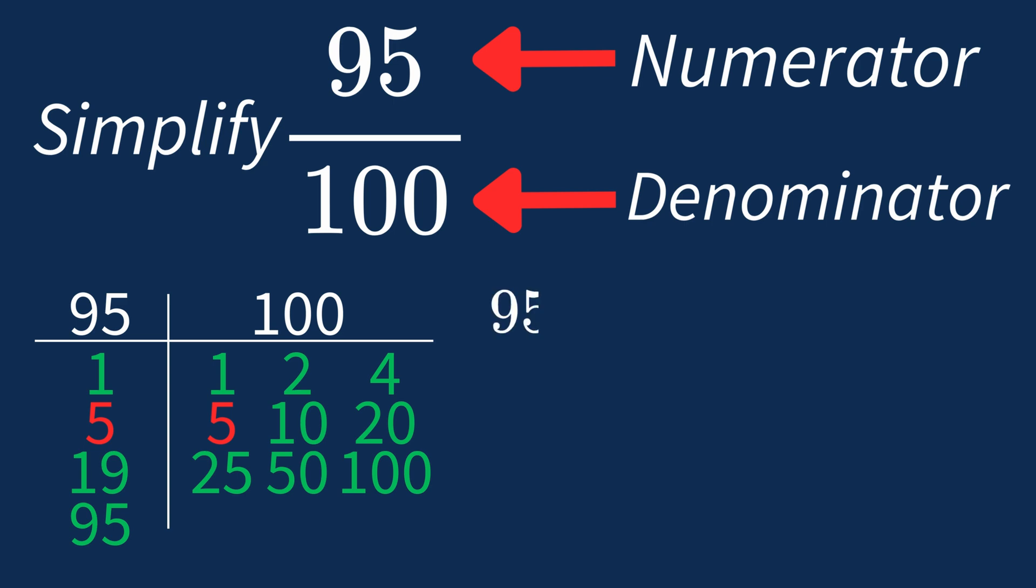Dividing the numerator 95 by 5 gives us 19. Dividing the denominator 100 by 5 gives us 20. So after dividing, the simplified fraction is 19 over 20.